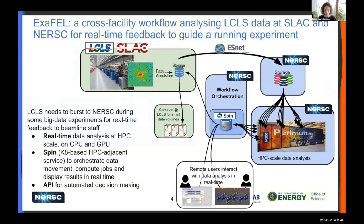This requires short turnaround — not precisely continuous computing, but very short turnaround time requirements, essentially urgent compute needs. It runs over many hundreds of compute nodes, both CPU and GPU. The workflow orchestration is done on an HPC-adjacent service at NERSC called Spin, which is Kubernetes-based. This orchestrator handles data movements, monitors workflow and job completion, and displays results in real time back to scientists at the experiment end station so they can monitor how things are going and adjust their experimental setup for each shot.